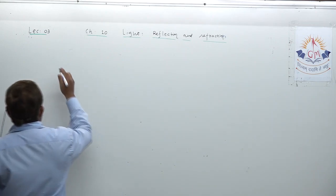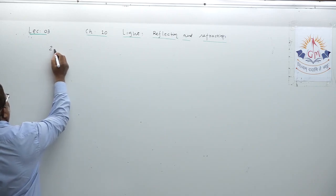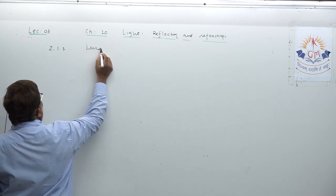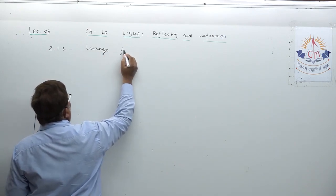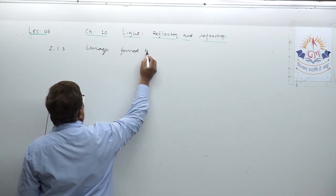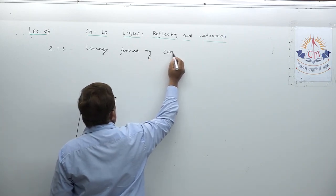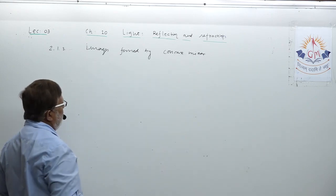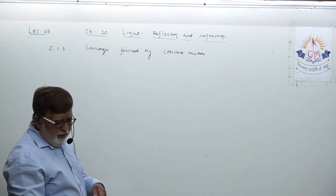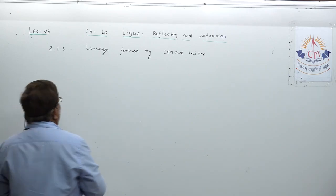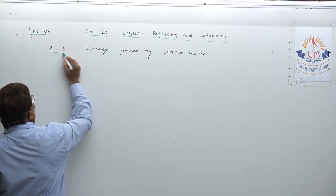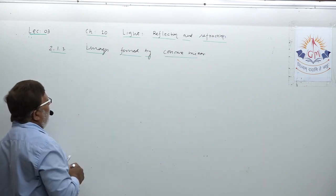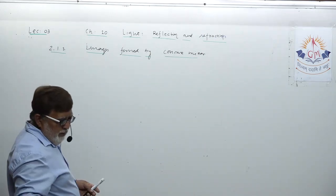Topic 2.1.3 continues in today's lecture. The topic is: image formed by concave mirror. We have already studied one particular diagram; now we are going to target the other diagrams. Image formed by concave mirror.